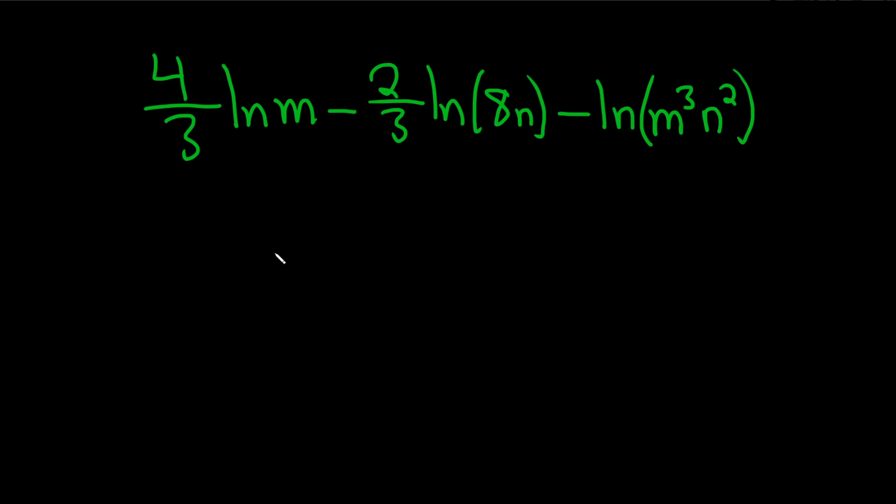In this problem we have three logarithms and we want to write it as a single logarithm whose coefficient is 1. So the main rule we're going to be using is this one. If you have the natural log of x minus the natural log of y, this is equal to the natural log of x over y.